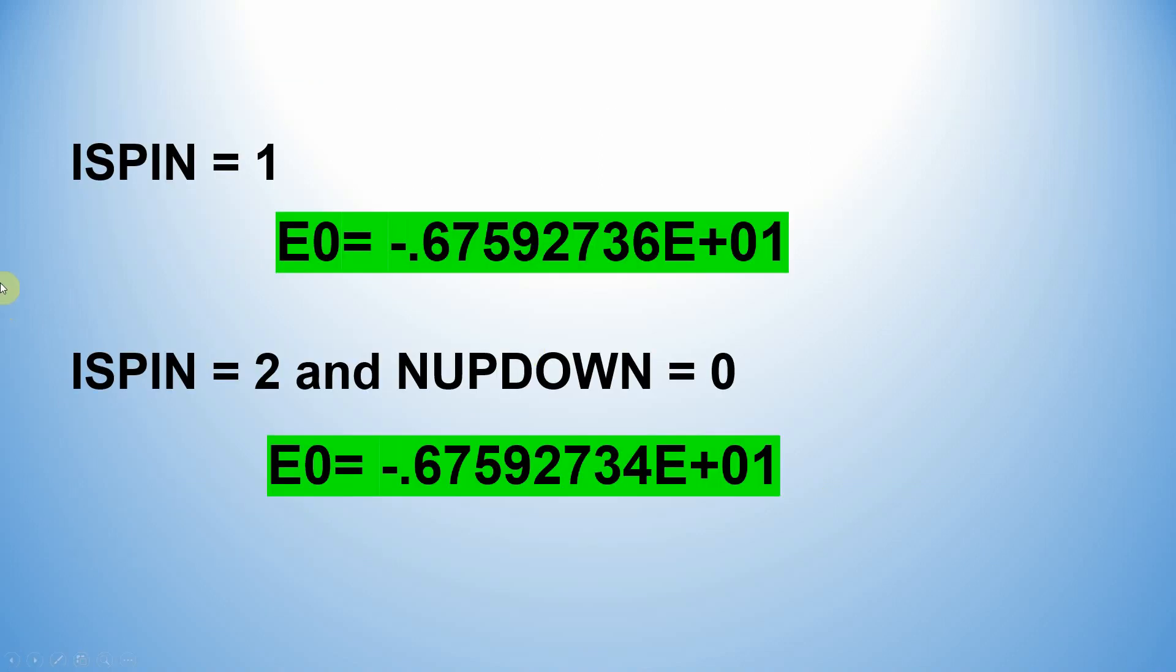Then I calculated with ISPIN=1 – this is the energy, the hydrogen atom energy. This is ISPIN=2 with NUPDOWN. If you see this energy, there's more or less the same energy, there is no difference. So you can use ISPIN=1 or ISPIN=2 with NUPDOWN=0 for your calculations.